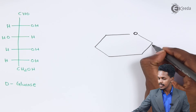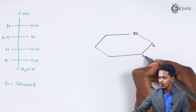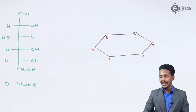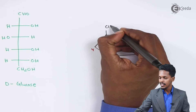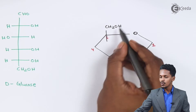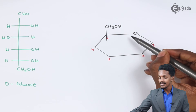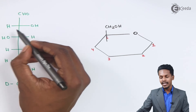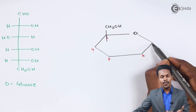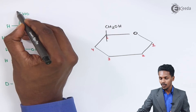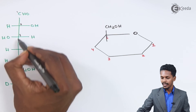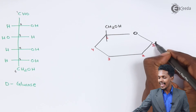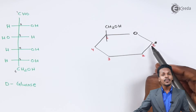Let me name the carbons: this is carbon number 1, carbon number 2, 3, 4, 5 — and on the fifth carbon atom there is a CH₂OH group, which is placed on the side where the oxygen is present, so it is on the upper side. Carbon 6 is included in the CH₂OH.